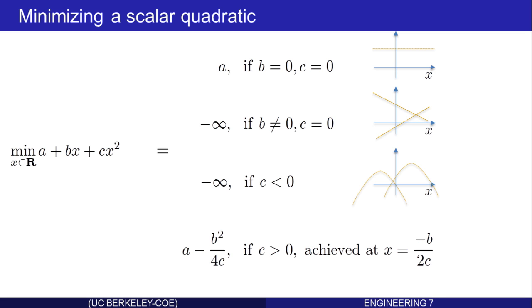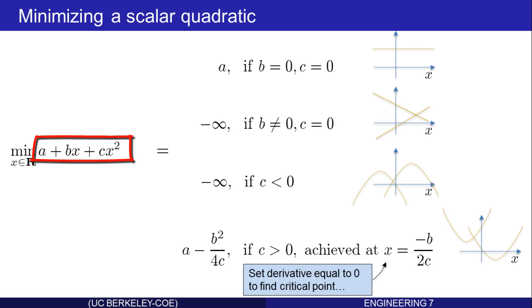Finally, the minimum is a minus b squared over 4c when c is greater than zero. That's achieved at x equal negative b over 2c. There are two examples of this, and by setting the derivative of the polynomial equal to zero, we find the critical point as listed, and the critical point is where the minimum is.